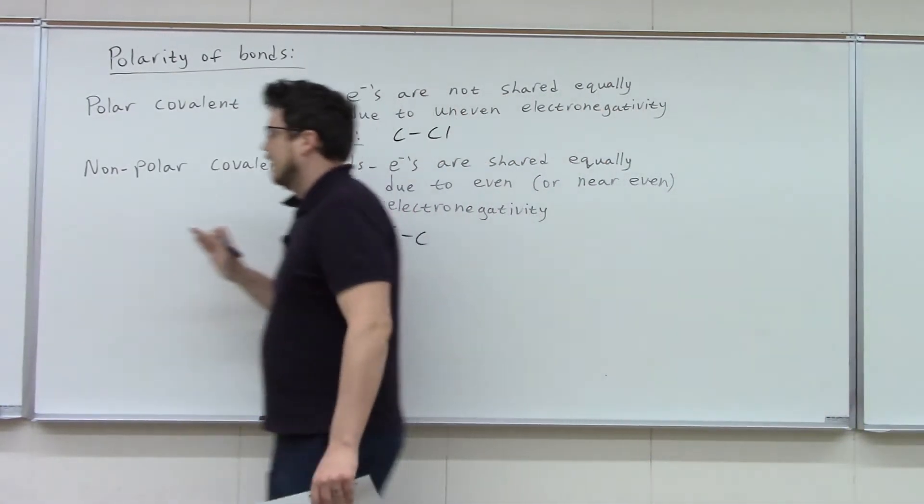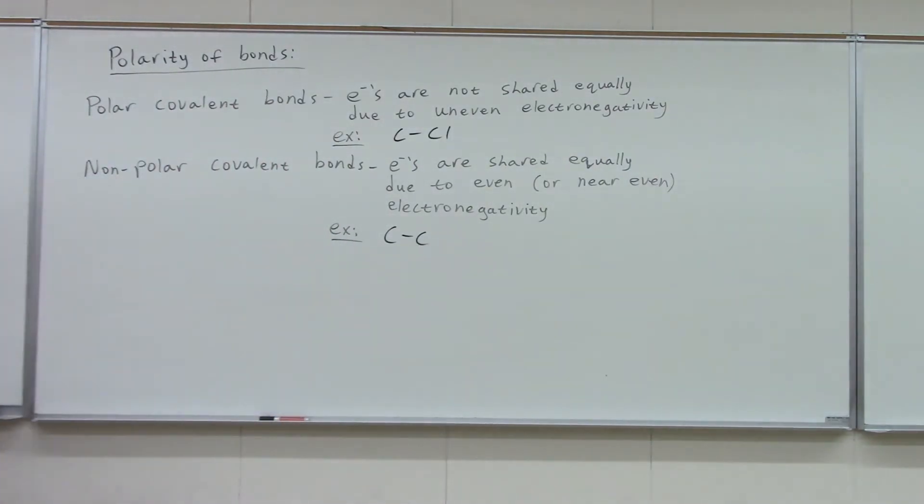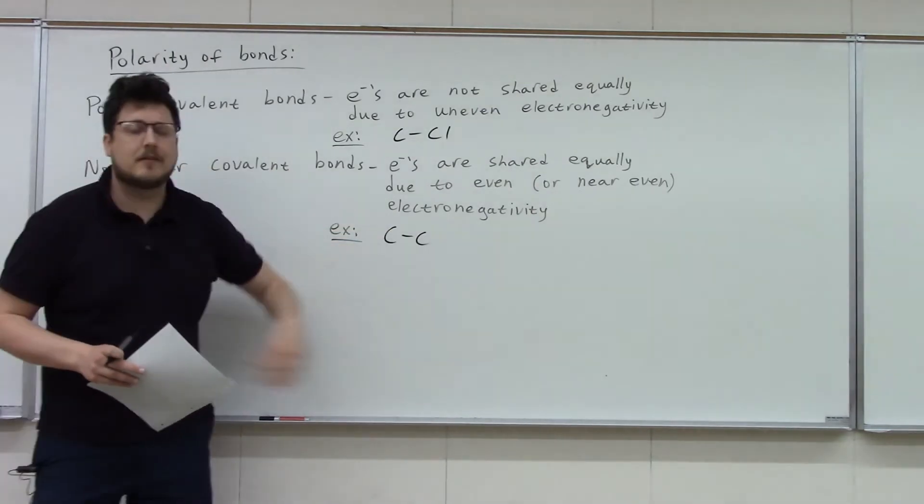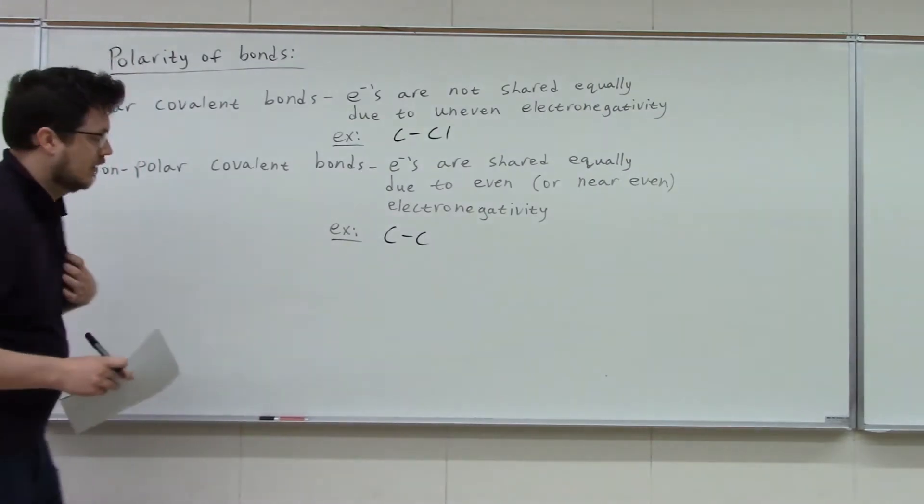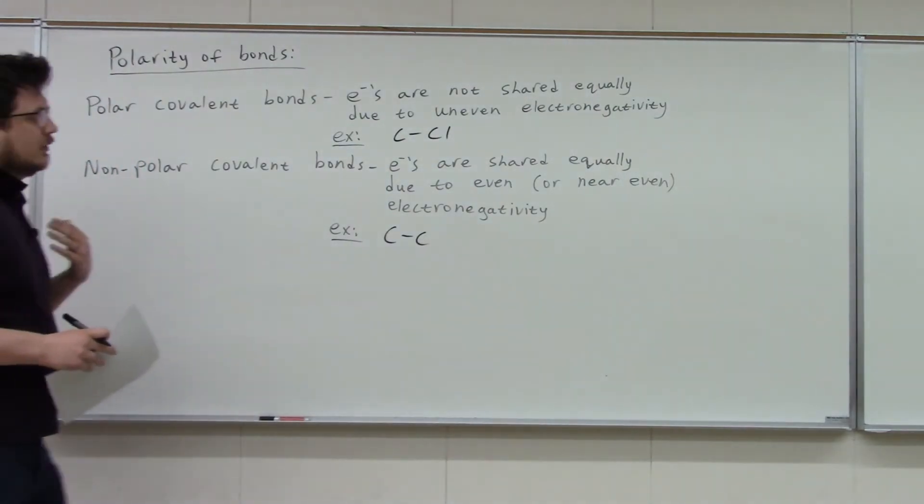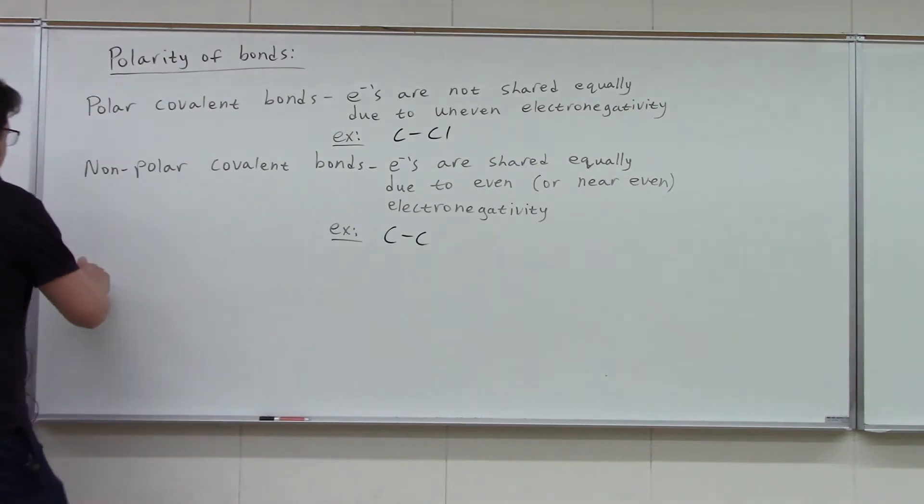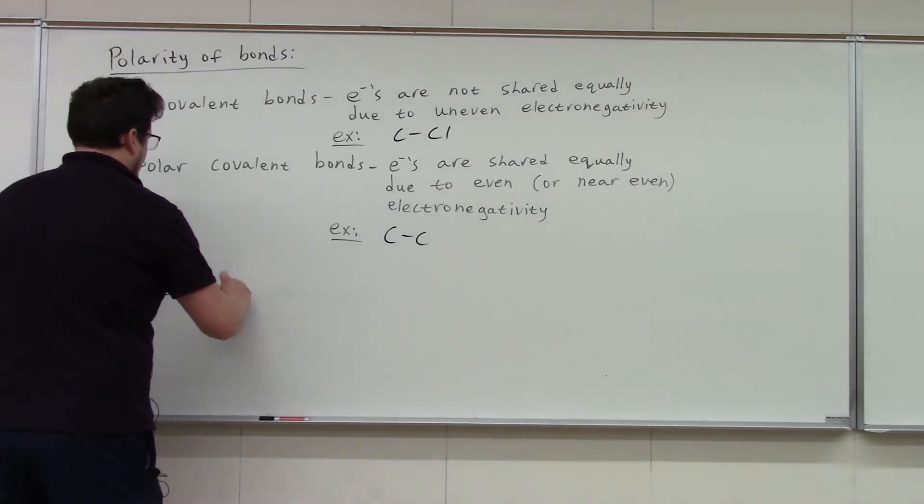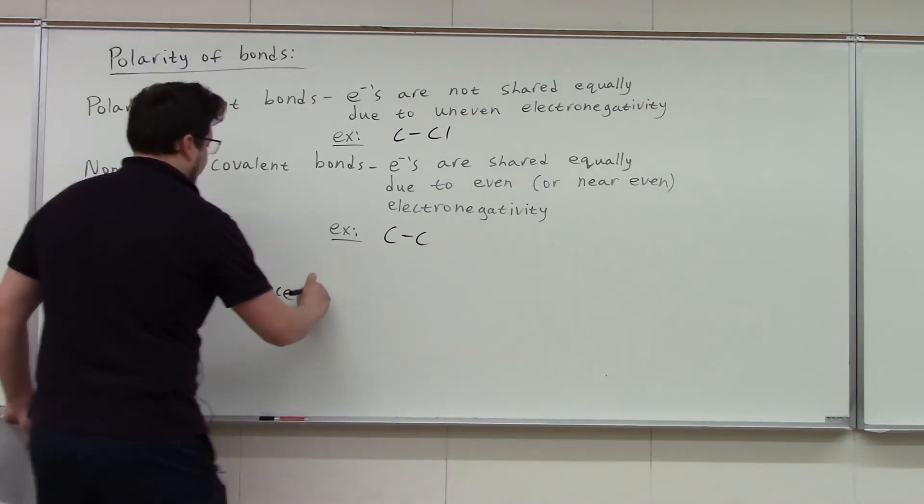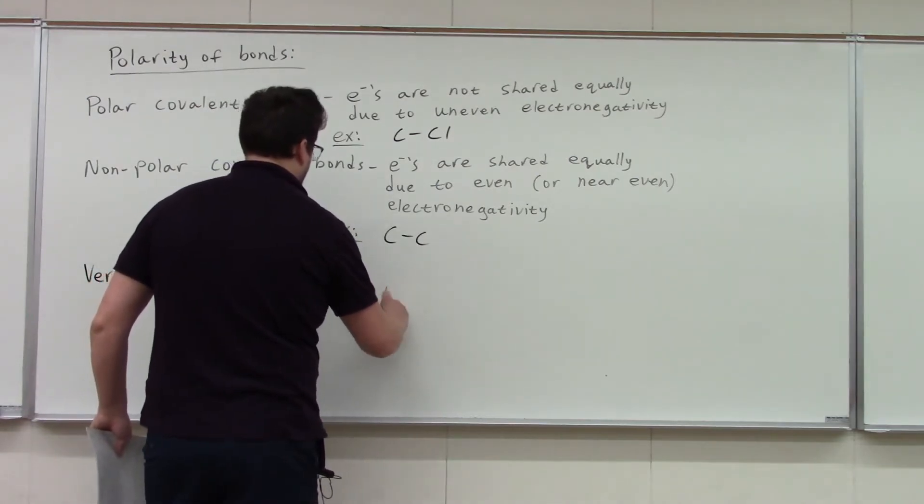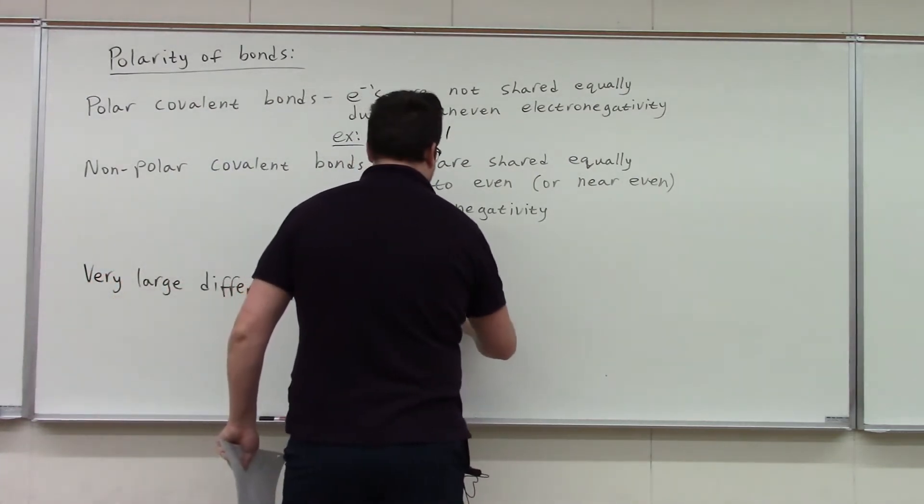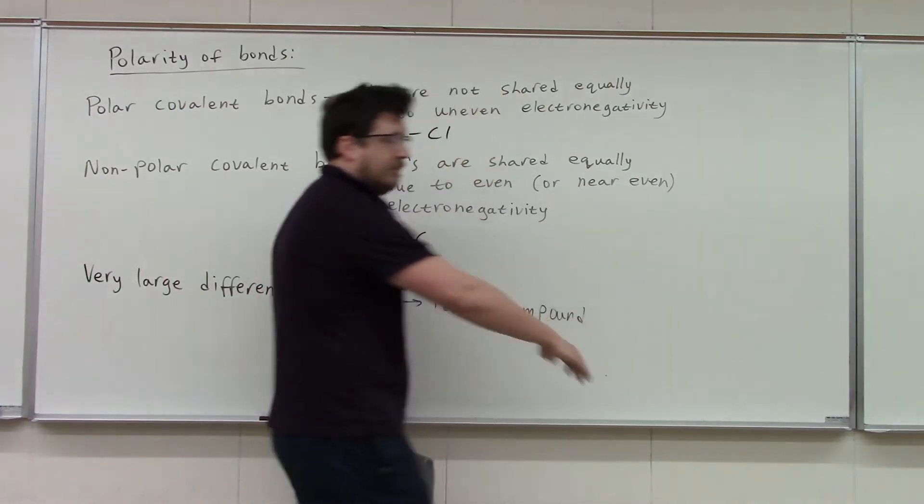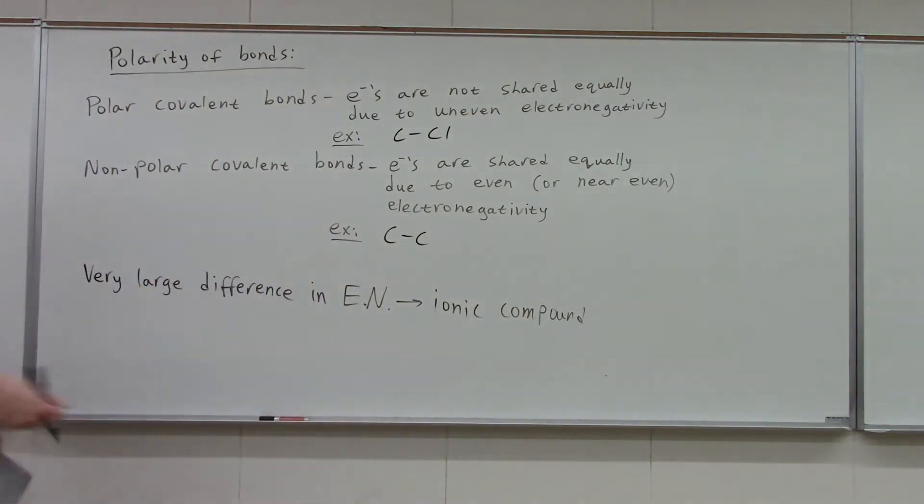Alright. So the next detail to talk about with this is the fact that if you go far enough, that difference in electronegativity gets large enough, then you have an ionic compound. So if you have a very large difference in electronegativity, that's an ionic compound. One side grabs the rope, tug of war, runs off with it. There is no sharing. Just give me that, gone.